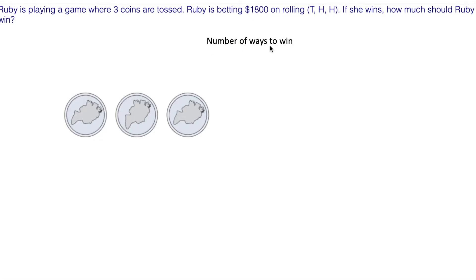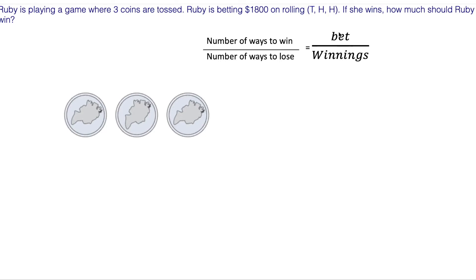We're looking at the number of ways to win to the number of ways to lose — that's the odds. And that's going to give us how much we bet compared to how much we should get. Our winnings. It sets up this nice little proportion.